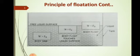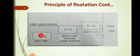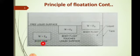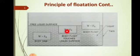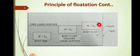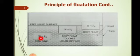This figure explains the principle of flotation. Three bodies are shown: first, a body sinking to the bottom of the liquid — this happens when the weight W is greater than the buoyant force Fb. When W equals Fb, the body floats and touches the liquid surface. When the weight is less than the buoyant force, the upward thrust pushes it up and it floats on the surface of the liquid.